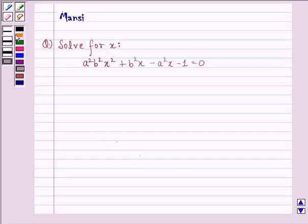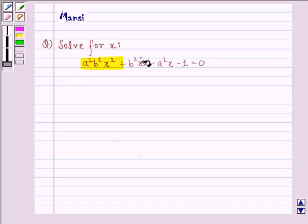Hi and welcome to the session. Let's work out the following question. The question says, solve for x: a square b square x square plus b square x minus a square x minus 1 equals to 0.